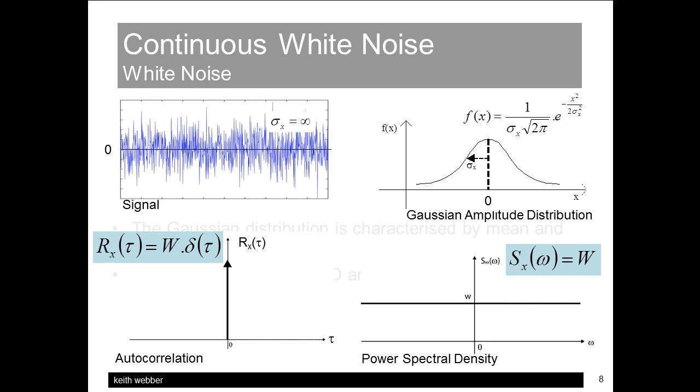The autocorrelation function Rx, the inverse Fourier transform of the power spectral density, is a Dirac function of infinite height and area W, showing that the signal only resembles itself at zero time lag, as its value may change instantaneously and by an infinite amount.